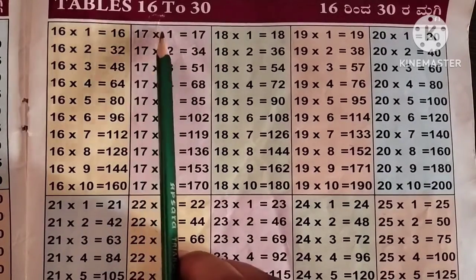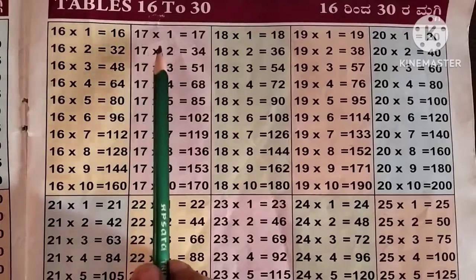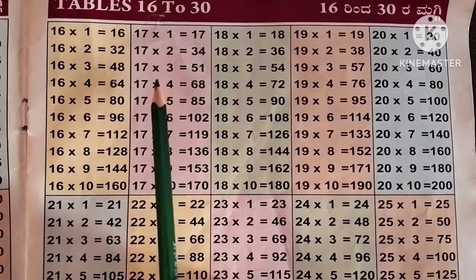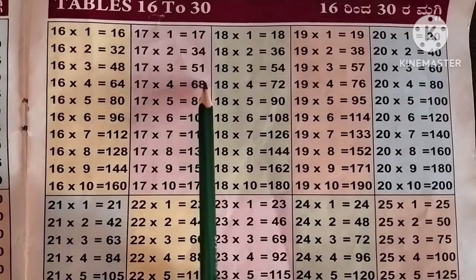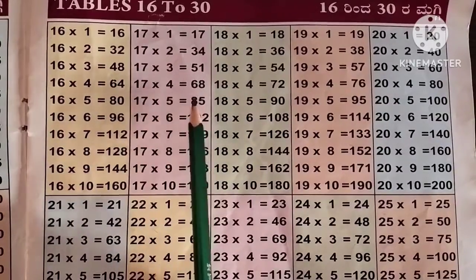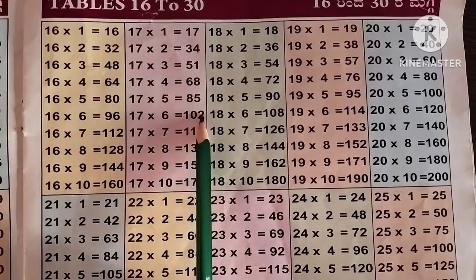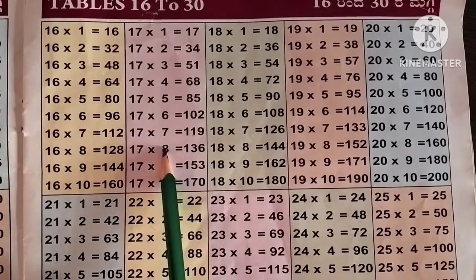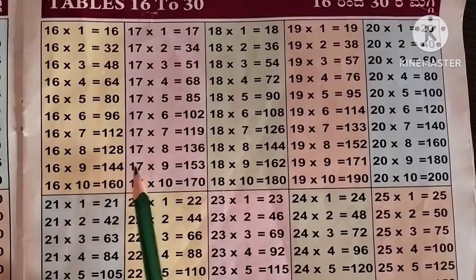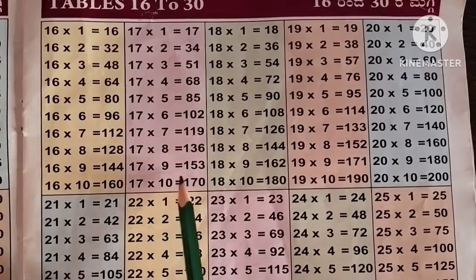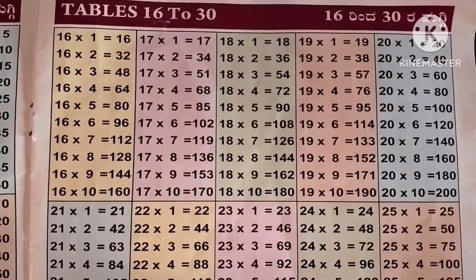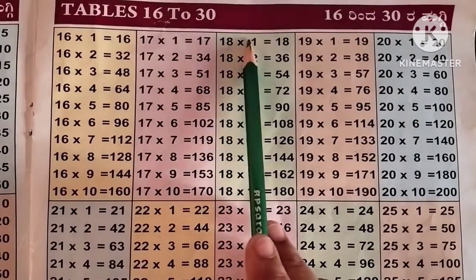Now the table of 17: 17 ones are 17, 17 2s are 34, 17 3s are 51, 17 4s are 68, 17 5s are 85, 17 6s are 102, 17 7s are 119, 17 8s are 136, 17 9s are 153, 17 10s are 170.